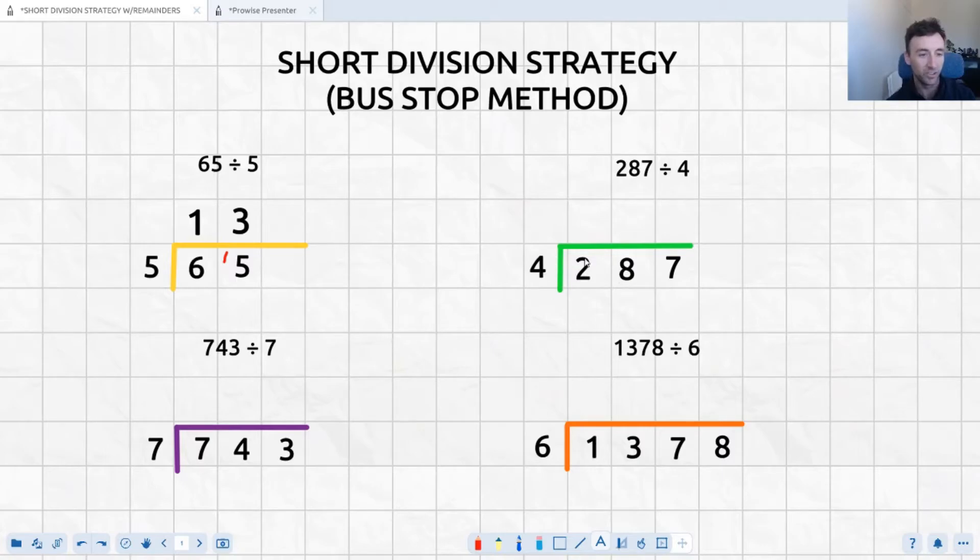So does 4 go into 2? Because 4 doesn't go into 2 evenly, I'm just going to even this up a little bit, then we need to move on to the next column and turn it into how many times does 4 go into 28. Now we know 4 goes into 28, because we're superstars with our multiplication tables. 4 goes into 28 exactly 7 times, so 7 times 4 is 28.